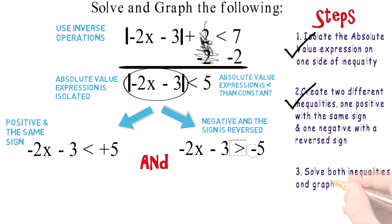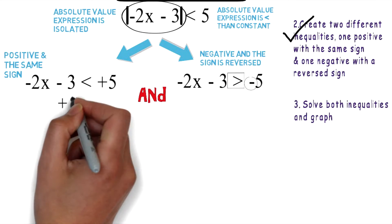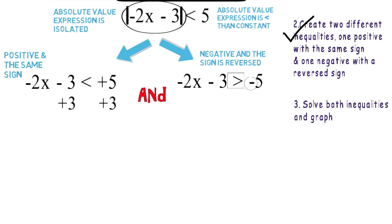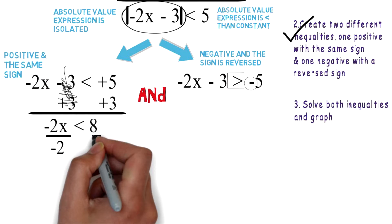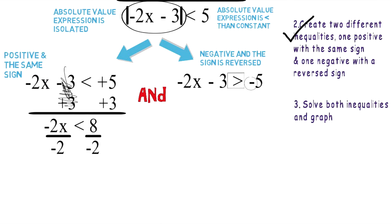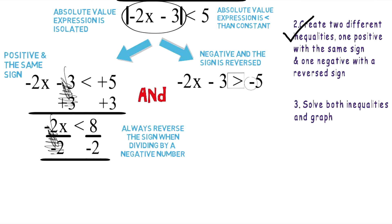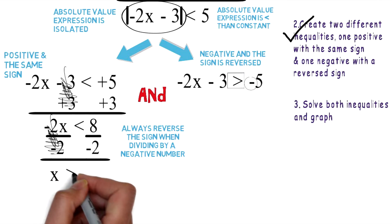Step three: solve both inequalities and graph. Starting with the first, add three to both sides of the equation. Positive three and negative three cancel each other out. You are left with negative two X is less than eight. Divide both sides by negative two. These two cancel each other out. Remember, always reverse the sign when dividing by a negative number. So you have X is greater than negative four, and the sign was reversed.